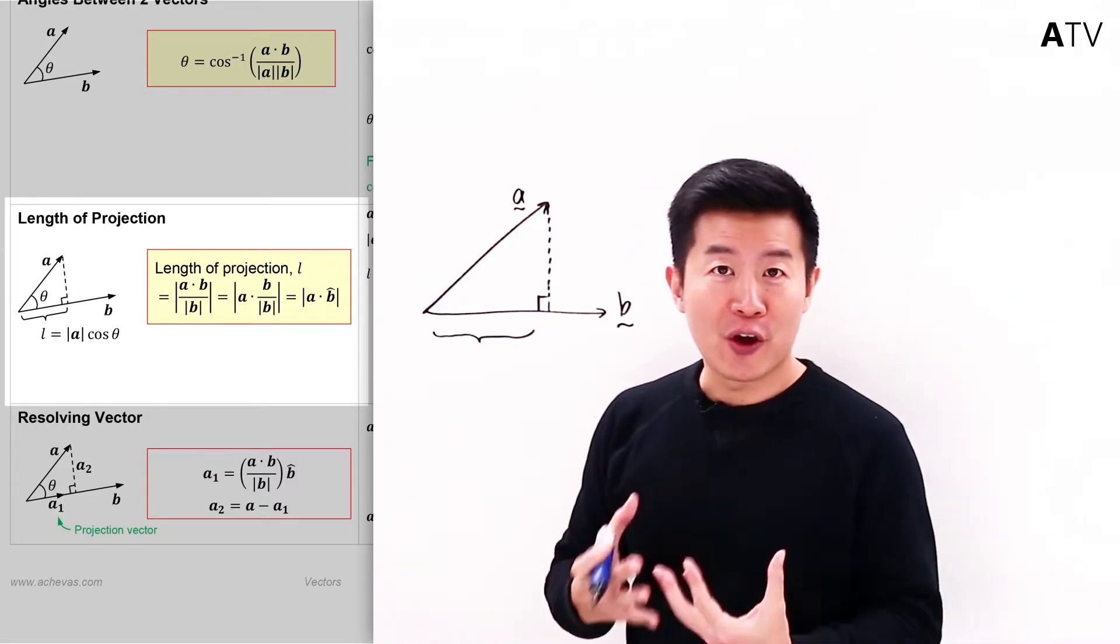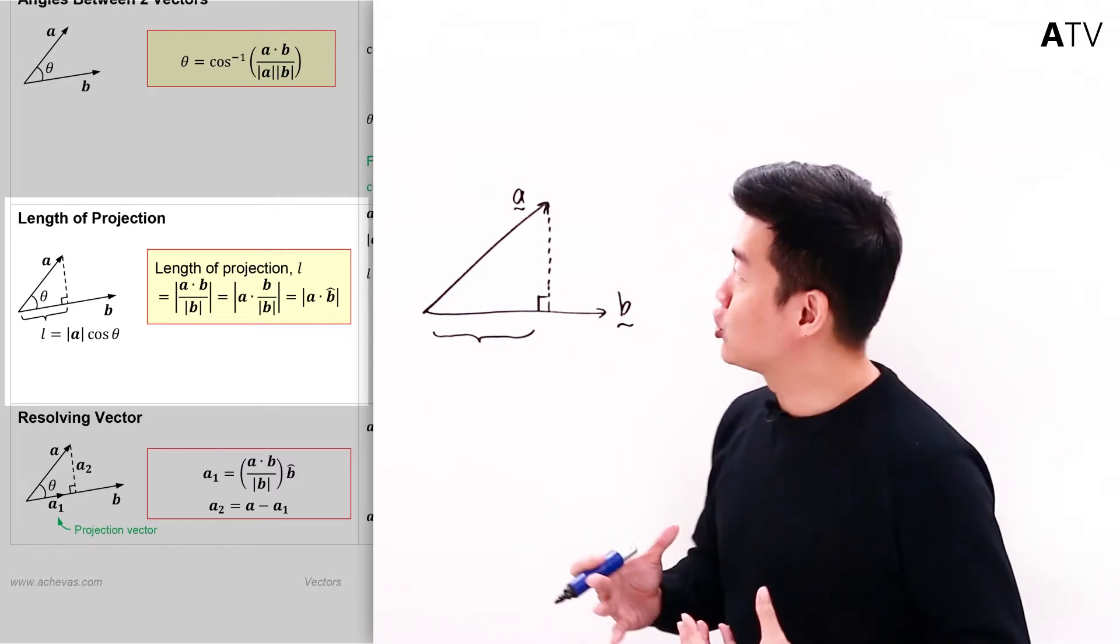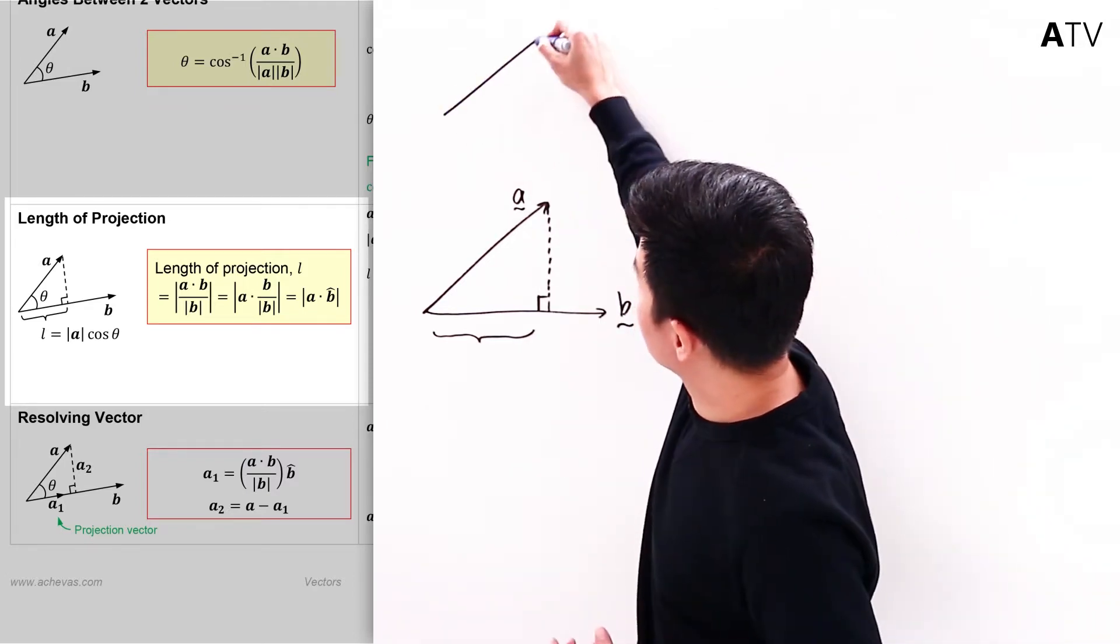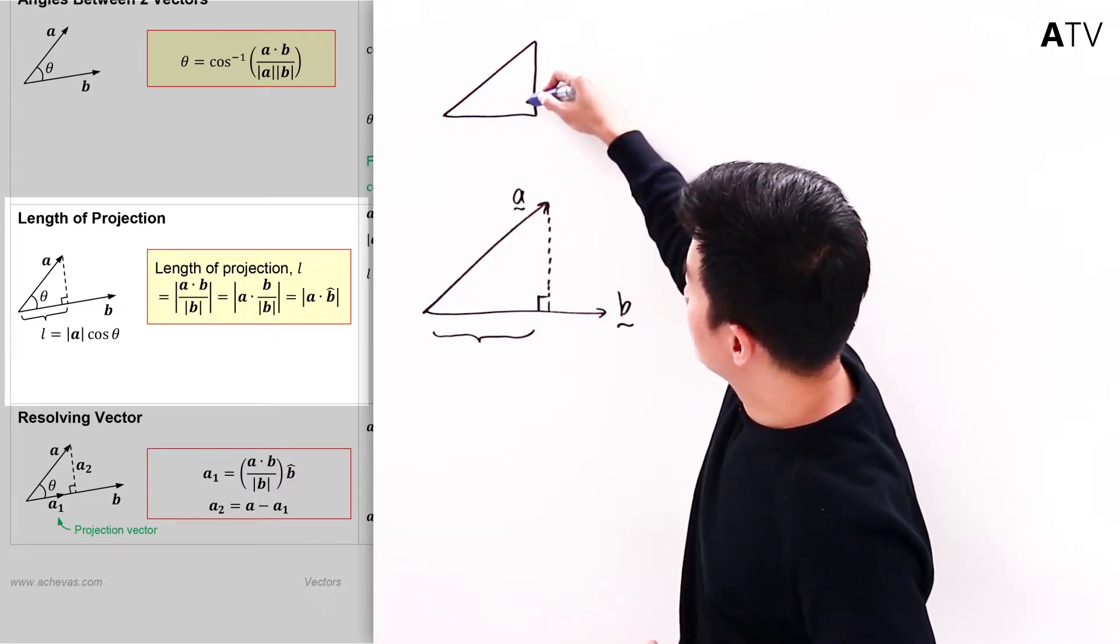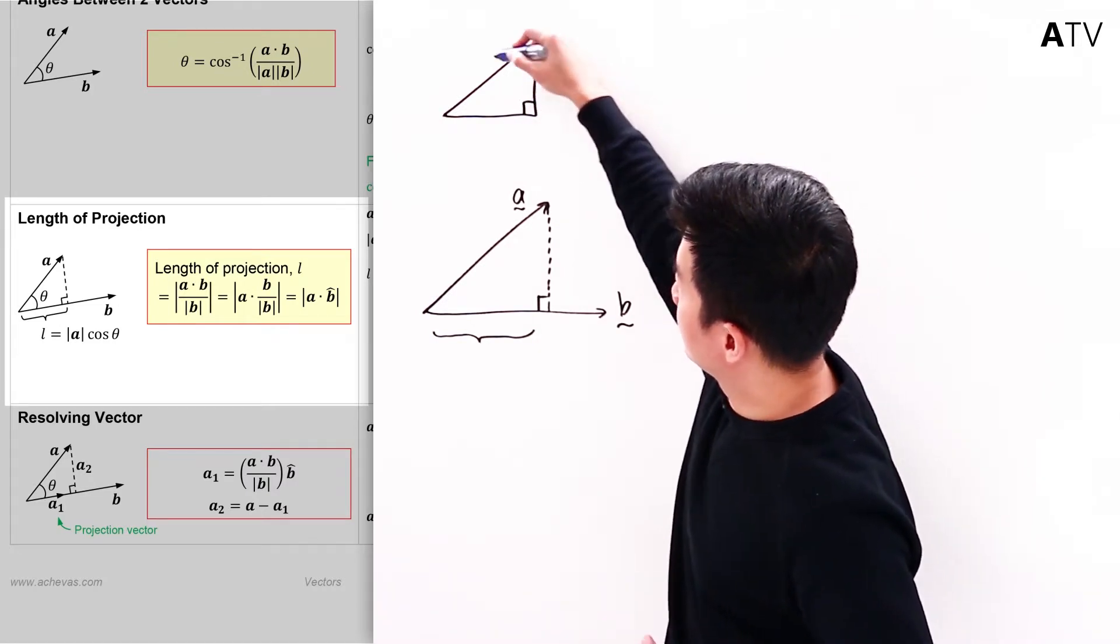And to do that, let me introduce you to a very simple but useful geometry, which is actually just a right-angled triangle. If I have a right-angled triangle, if this is a right angle here,